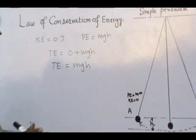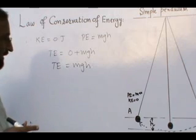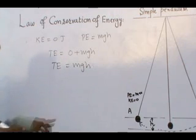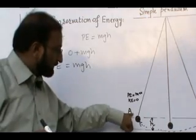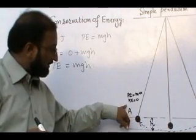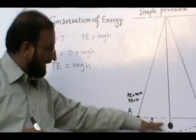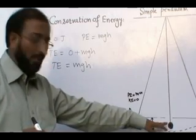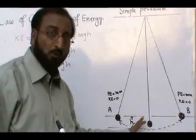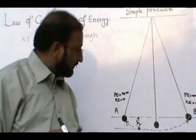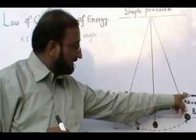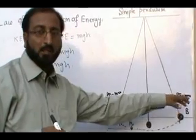From this example, we have considered that when the bob moves from A to O, its potential energy is changed into kinetic energy. And when the bob moves from position O to B, its kinetic energy is changed back into potential energy.